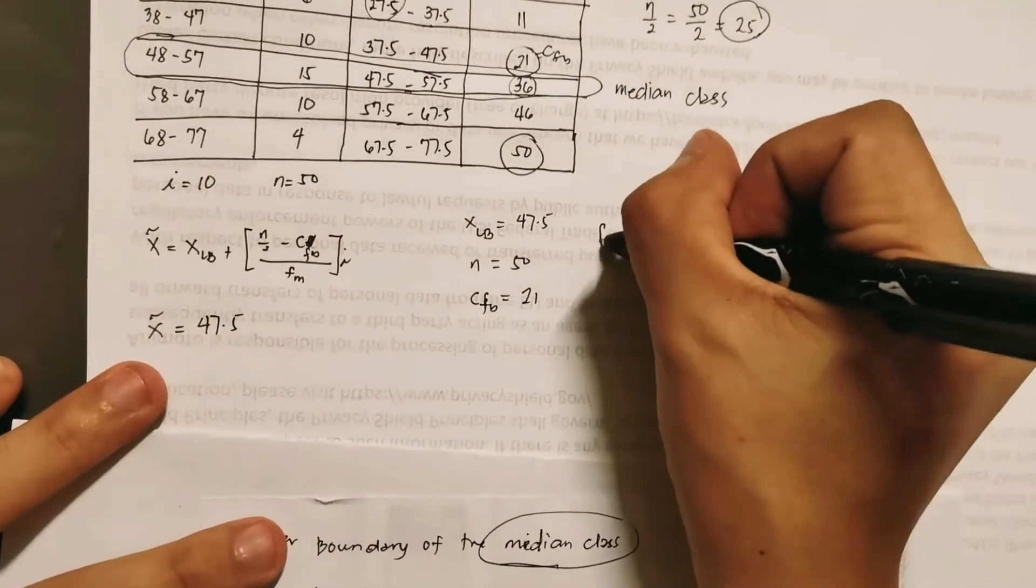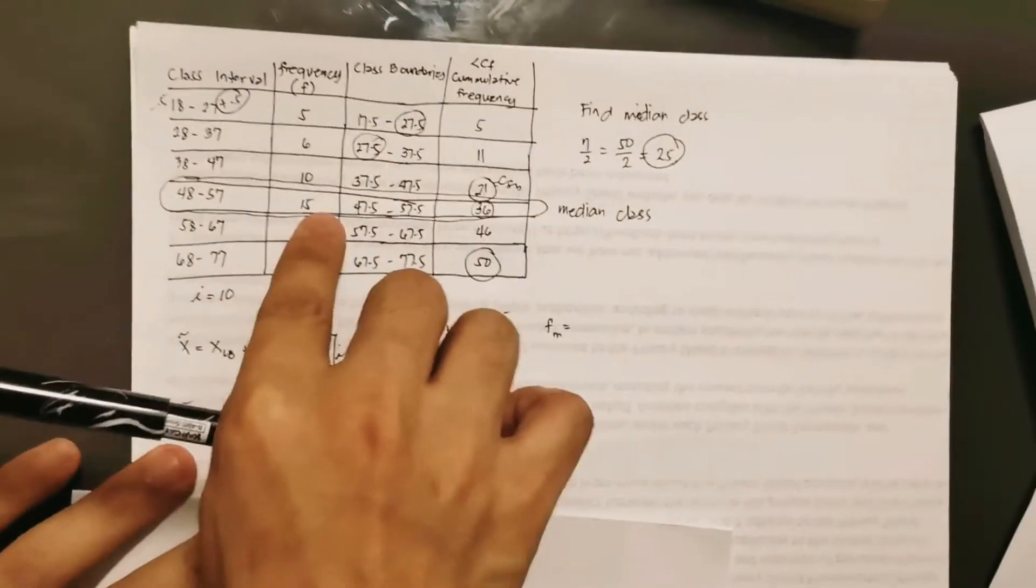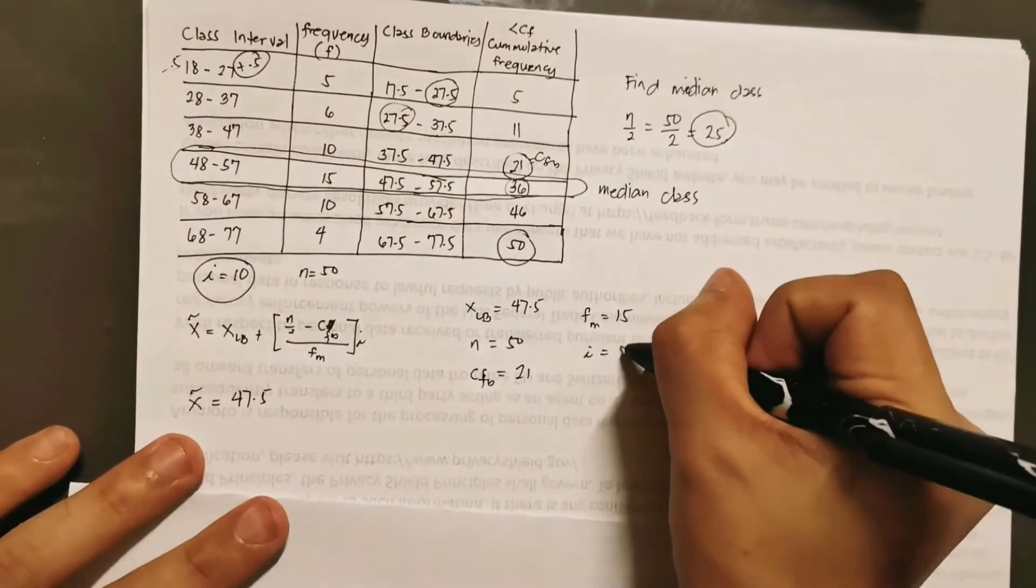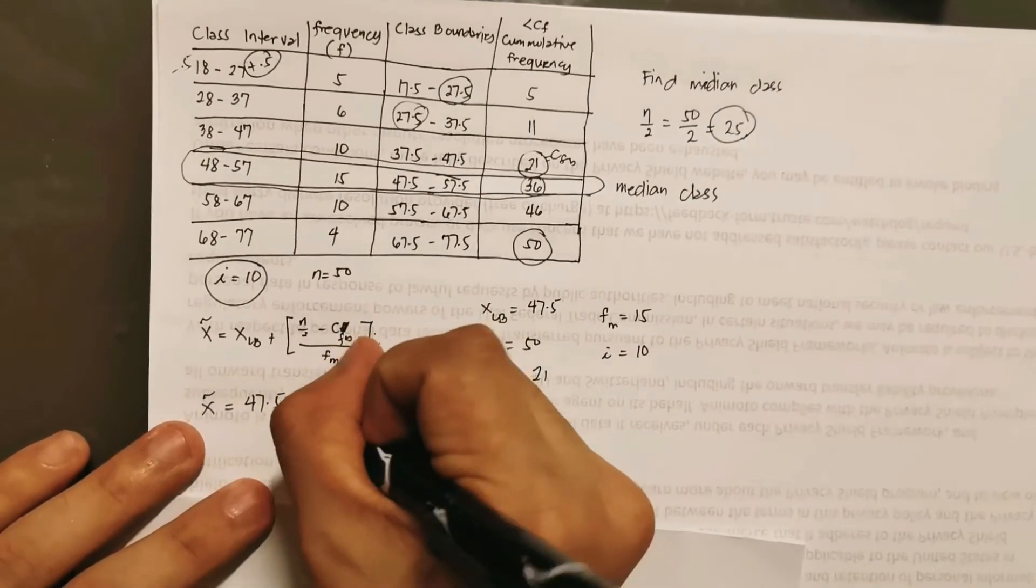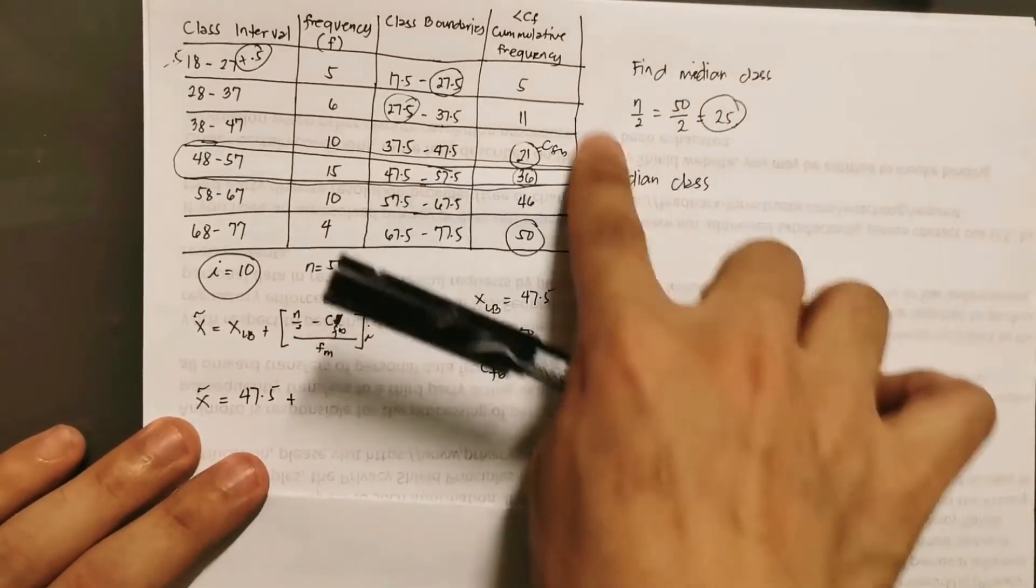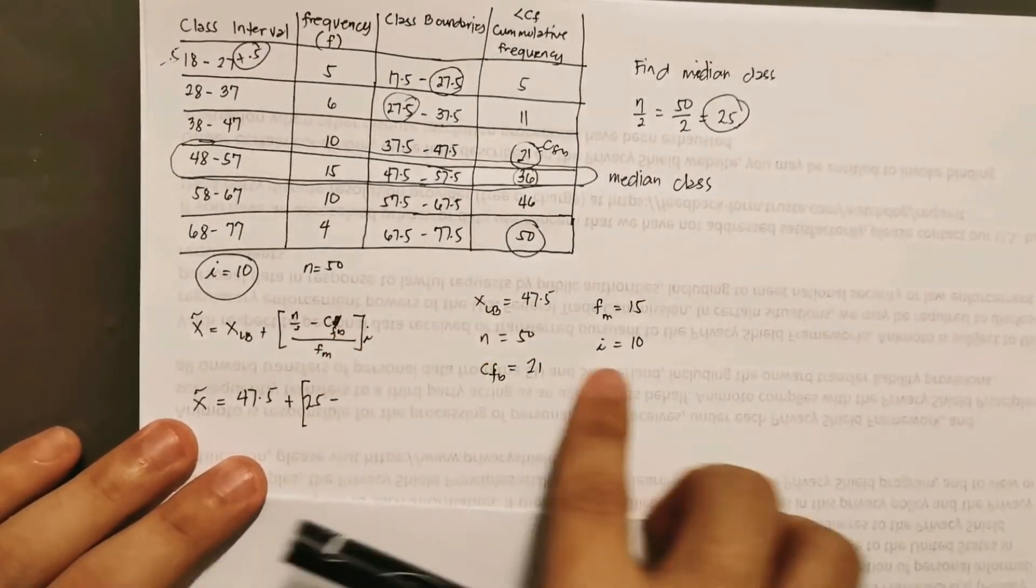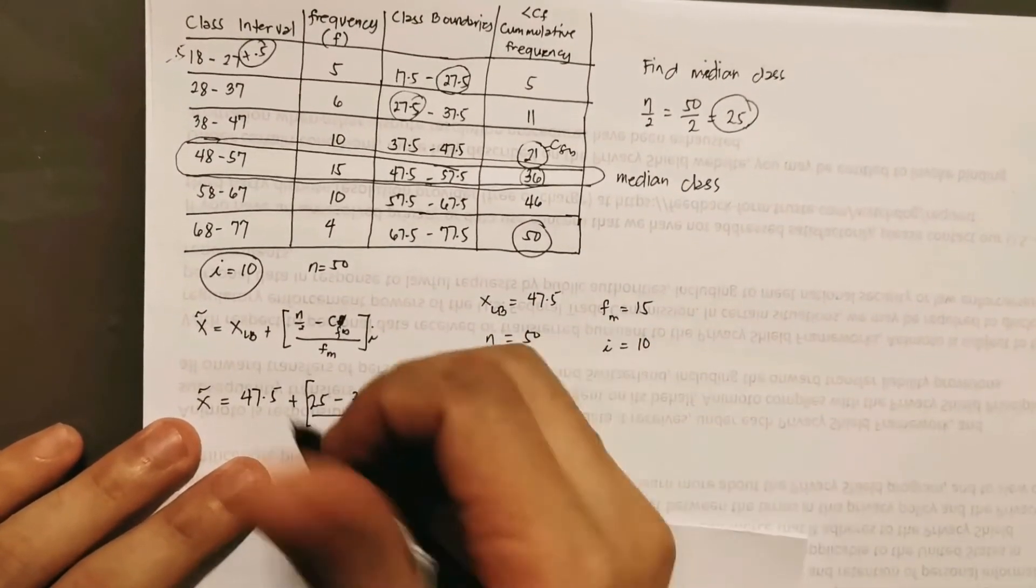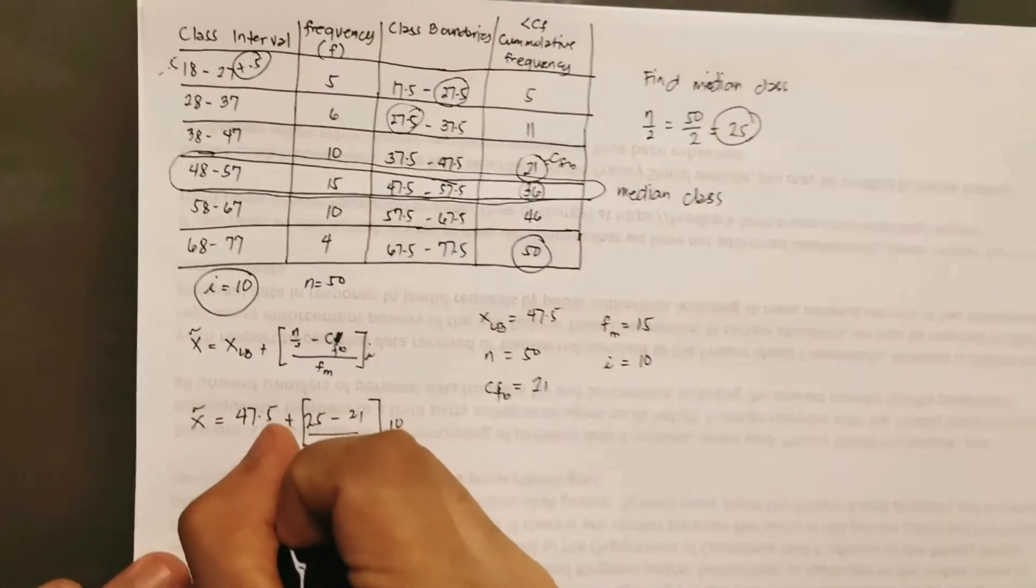And next, we have f sub M. That's the frequency of the median class. The frequency of the median class is 15. So that is, this is 15. Of course, our I is here, which is 10. So I think we did not miss anything. Let's substitute. So we have now x sub LB is 47.5. Our N divided by 2, which is already found here, which is 25. And then, minus our CF sub B is 21, divided by our f sub M, that is 15, times our I, which is 10. Okay? Let's continue.